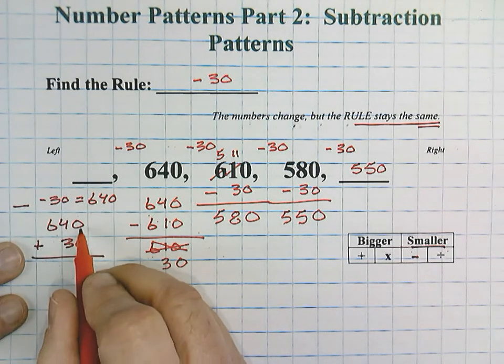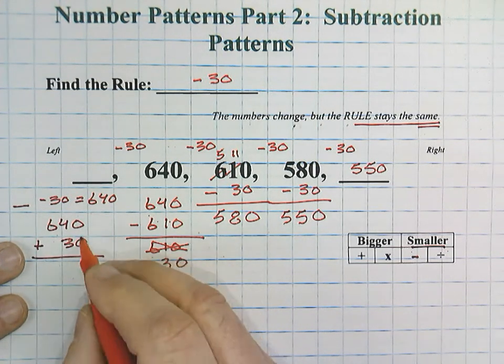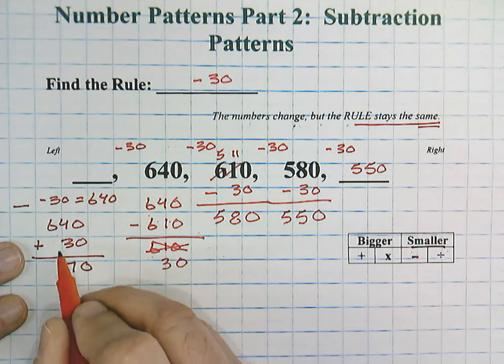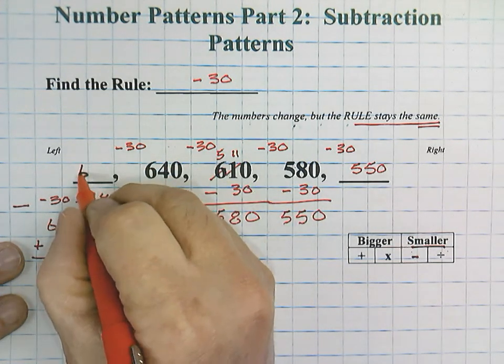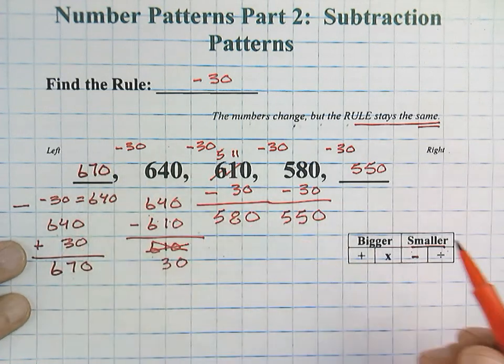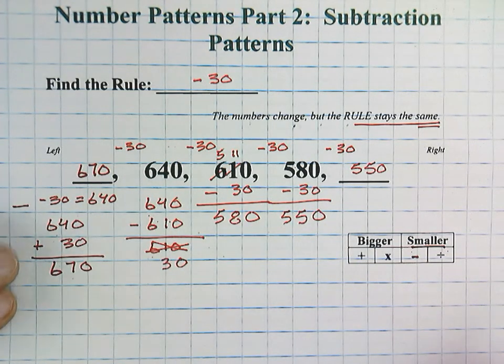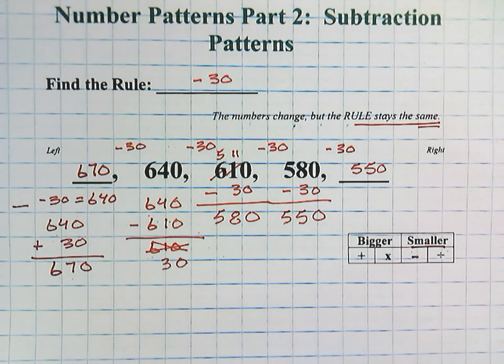So, 640 plus 30, not minus, plus 30. 0 plus 0 is 0. 4 plus 3 would be 7. And 6 plus nothing would be 6. So, our first number in this pattern would be 670. All right, thanks everybody, we'll see you next time.